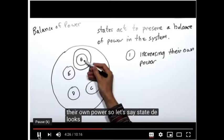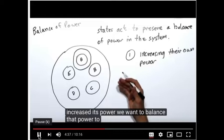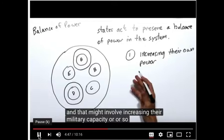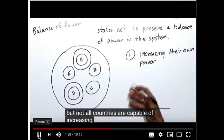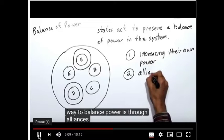For instance, state D might observe that state A has increased its power and decide to increase its own power in response — perhaps by increasing its military capacity — achieving an equilibrium or balance between itself and state A. However, not all countries can increase their power that easily due to resource and monetary constraints, so the second way to balance power is through alliances.